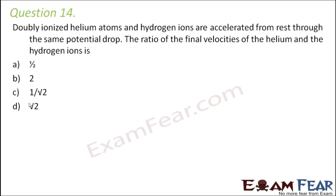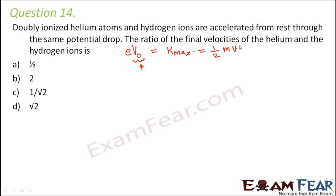Question No. 14: Doubly ionized helium atoms and hydrogen ions are accelerated from rest through the same potential drop. The ratio of the final velocities of the helium and the hydrogen ions is? We need to find velocities where the potential drop is the same. Using the relation that eV₀ equals K_max, and K_max equals half mv², we get that velocity squared equals 2eV₀ divided by m. So velocity is proportional to the square root of e by m.